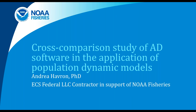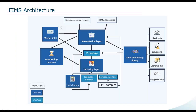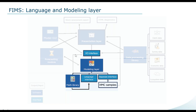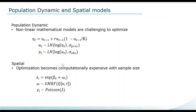Thanks, Kristin. I'm going to be talking today about a cross comparison study of automatic differentiation software and the application of population dynamic models. FIMS is looking to develop a modular platform to advance stock assessments and next-generation stock assessment modeling. We need to choose a software platform for our modeling layer, based on factors such as the underlying programming language, what types of inference it can do — both Bayesian and maximum likelihood — the community support, and the input-output interface.